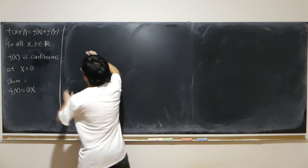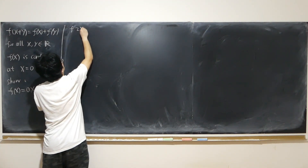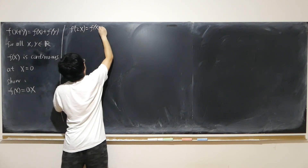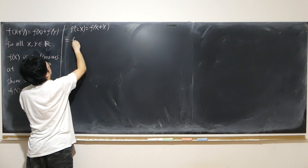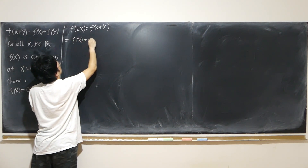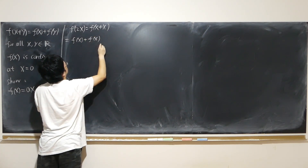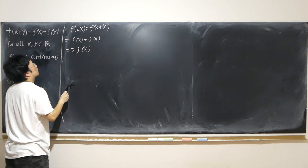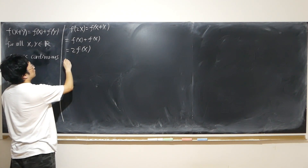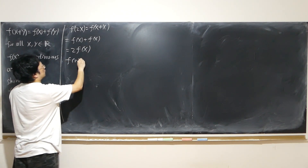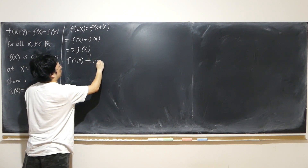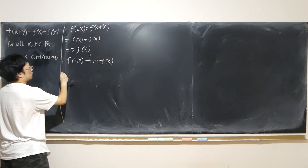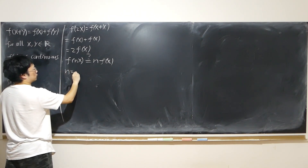First, let's look at f of 2x, which is equal to f of x plus x. That is equal to f of x plus f of x, which equals 2f of x. So now we want to have a look at f of nx — is it equal to n times f of x according to this pattern? We already know it's true for n equal to 2.